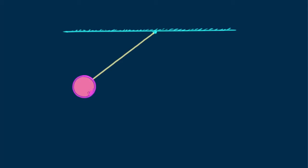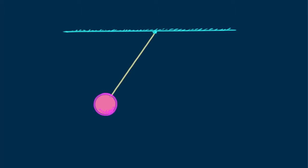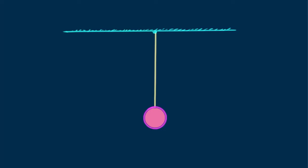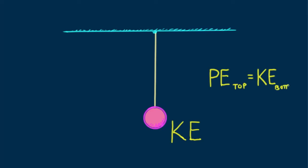Consider a simple pendulum. When the pendulum bob is raised from its lowest point, it has potential energy relative to the lowest point at the bottom of its swing. It is held at rest, so it has no kinetic energy yet. Release the bob and it swings toward the bottom. At an elevation partway to the bottom, it has both potential energy — though less than at the top — and some kinetic energy. As it swings by the bottom of its path, potential energy is transformed completely into kinetic energy.